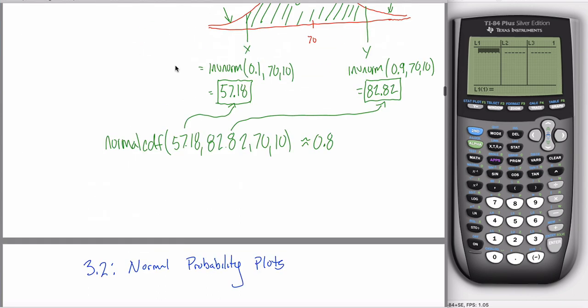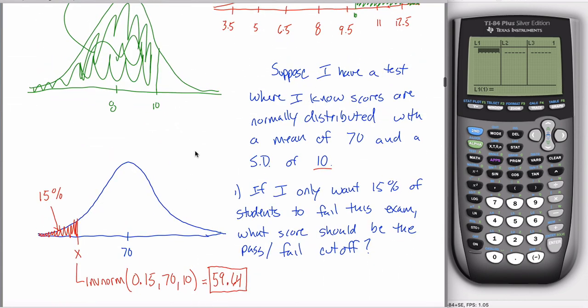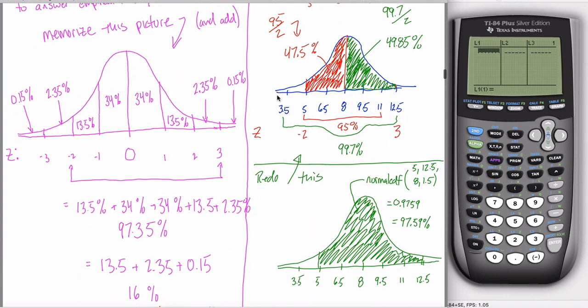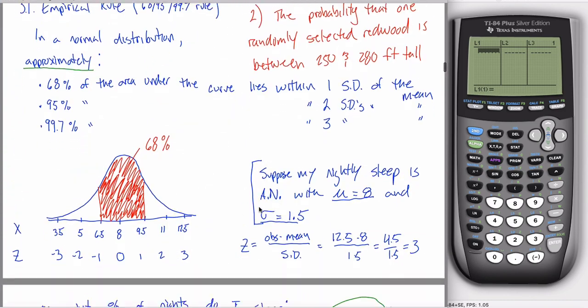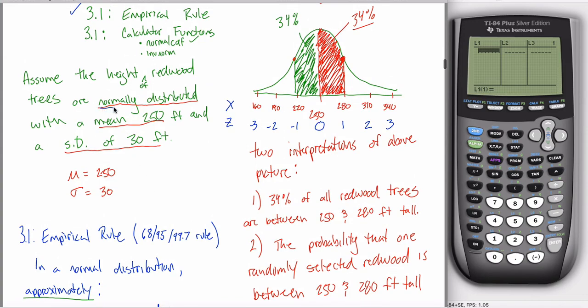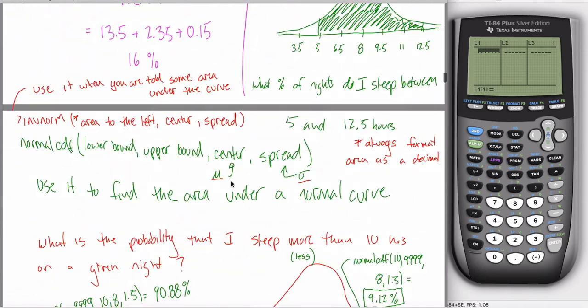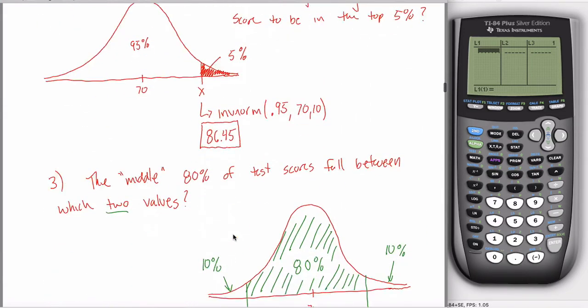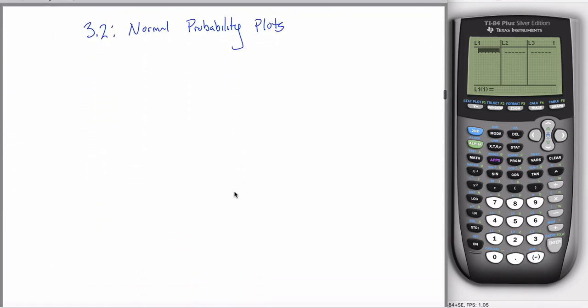Normal probability plot. So the idea here is that everything we've done in 3.1, whether we were talking about a test or the height of redwoods or the number of hours that I slept or whatever other examples I came up with, in every single problem there was an assumption. Suppose that my nightly sleep is normally distributed. Assume the height of redwood trees are normally distributed. In every one of these problems we had that assumption.